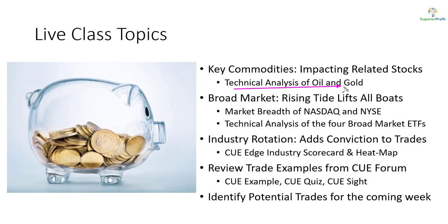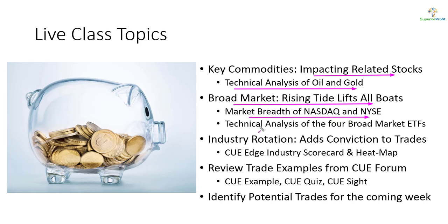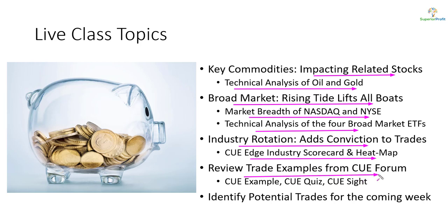In today's topics, we will analyze two commodities — oil and gold — using technical charts, as they tend to impact related stocks. When swing trading stocks, we like to trade in the direction of the market, and we will study market direction using Nasdaq and NYSE market breadth and technical analysis of market ETFs. We will also align trades with industry direction using the industry scorecard and heatmap, and review recent trade ideas and potential trades for the coming week.